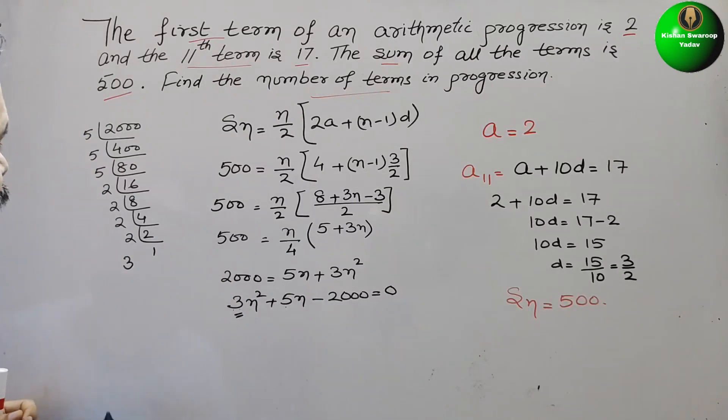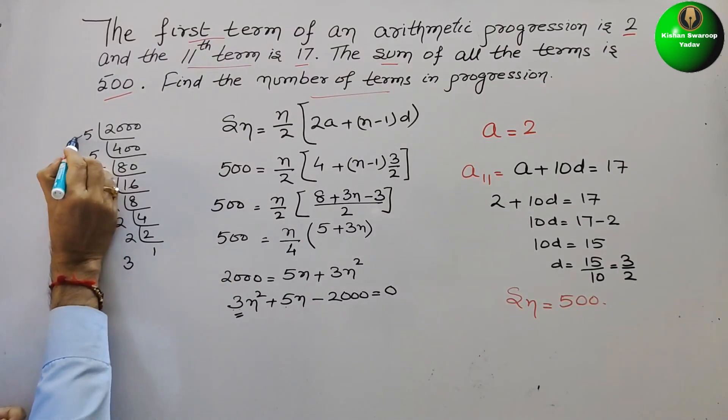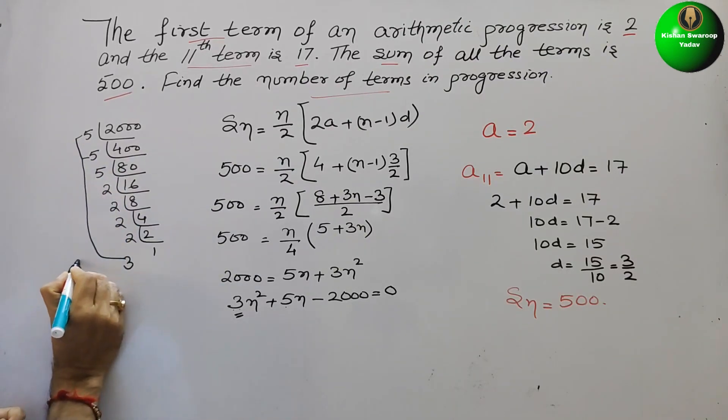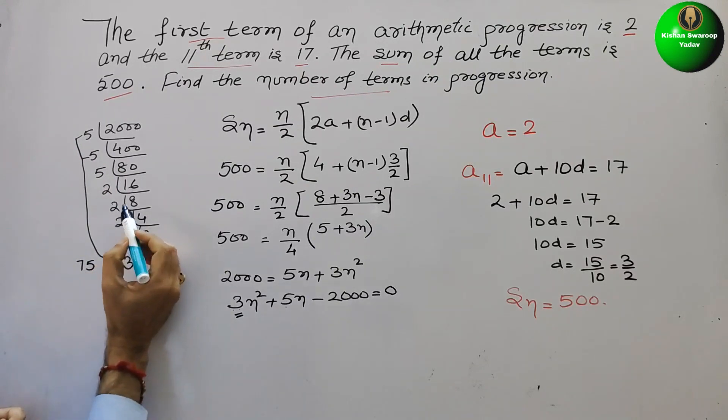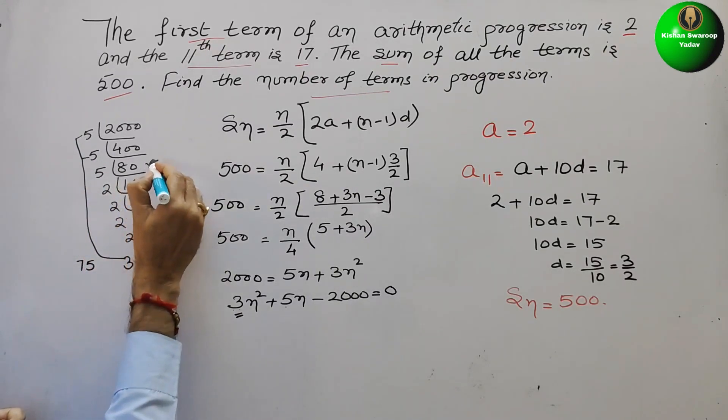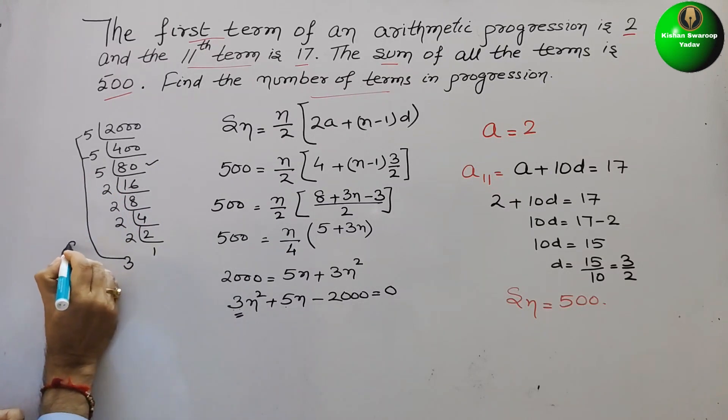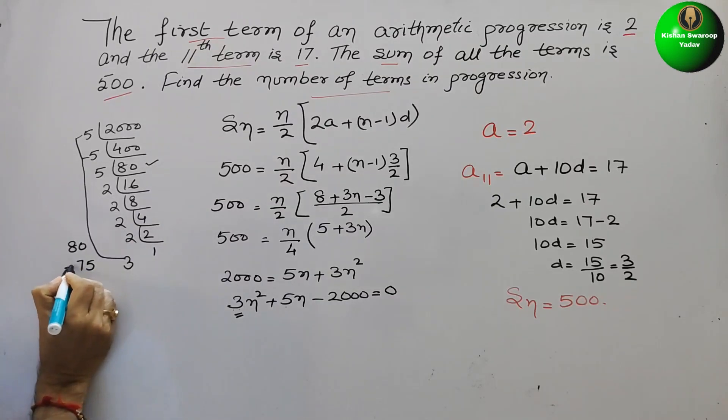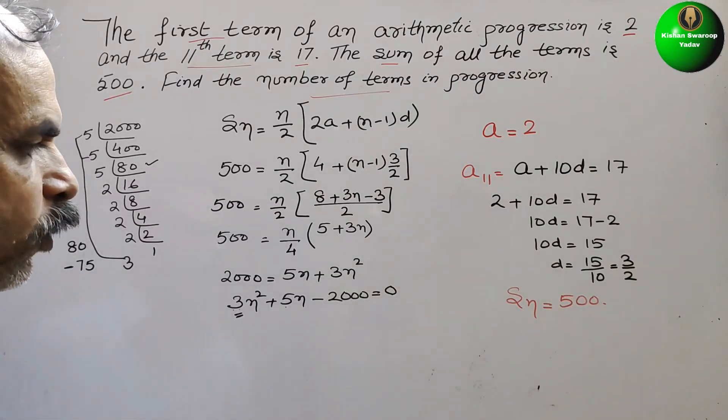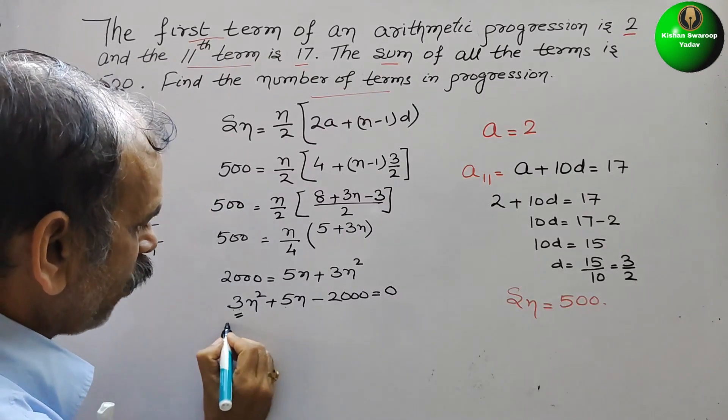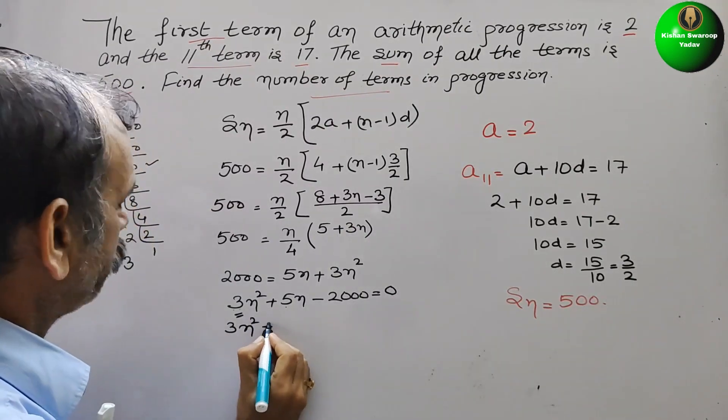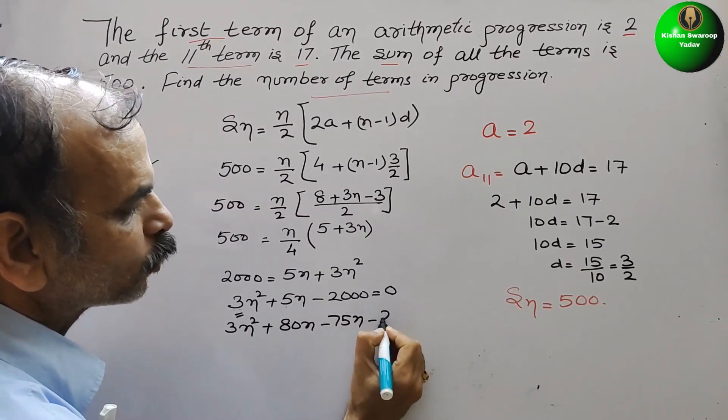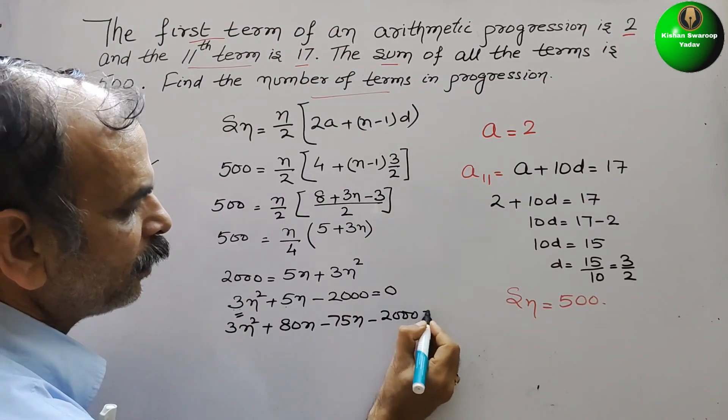How? So you can see here. 5 into 5 is 25. 25 into 3 is 75. And here comes your 16 into 5 is 80. 1 is 80, 1 is 75. We have to make it plus 5. That means we will minus 75. Therefore, it will be now 3n² plus 80n minus 75n minus 2000 is equal to 0.